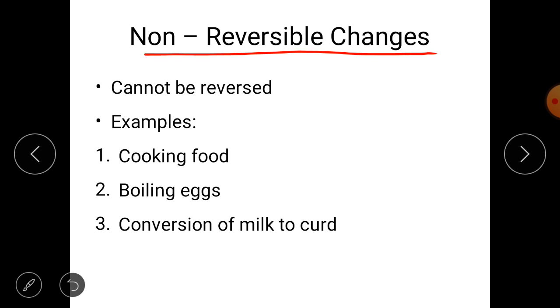Let us understand with the help of some examples. Cooking of food. If we have cooked the food then we cannot make it as it was earlier. We cannot make it raw. That's why it's a non-reversible change.